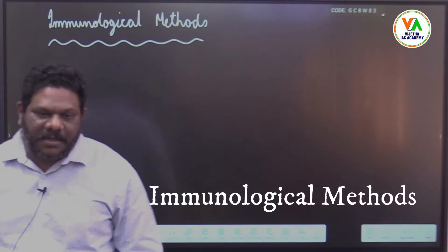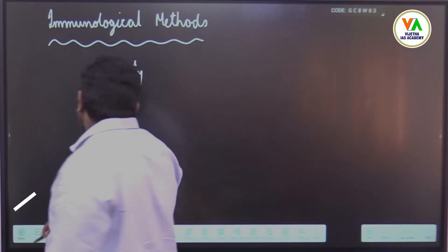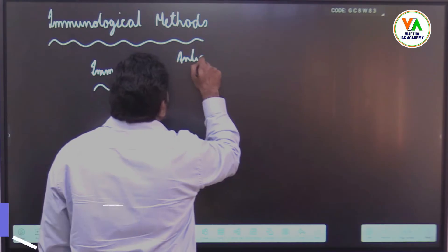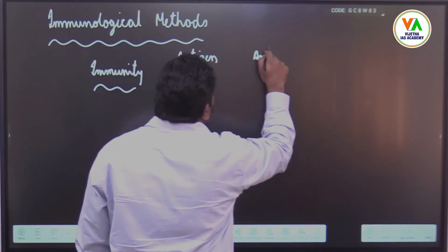You can see the term. What is immunity? Immunity is the interaction between antigen and antibody.